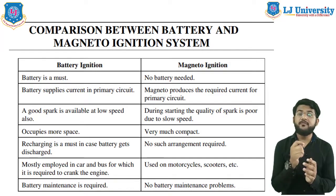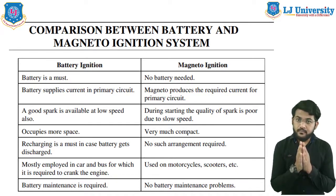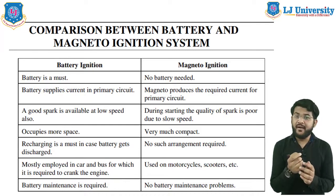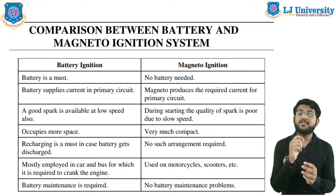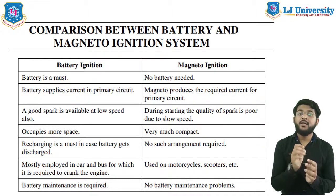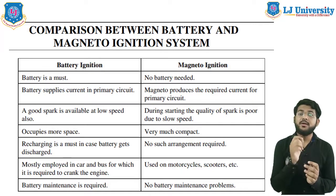Battery ignition system was generally used in four-wheelers but nowadays is also commonly used in button-start two-wheelers like Pulsar, Kinetic Honda, Activa, and Scooty. In this case, a 6-volt or 12-volt battery supplies the necessary current to the primary winding. Magneto ignition system is mainly used in kickstart two-wheelers, for example Bajaj scooters, Splendor, and Passion. In this case, the magneto produces and supplies current to the primary winding — the magneto simply replaces the battery.